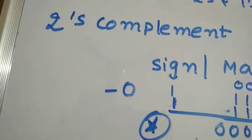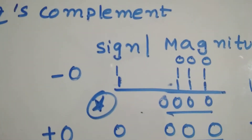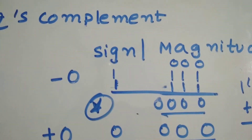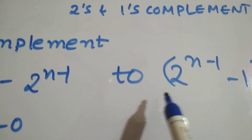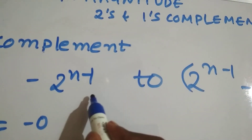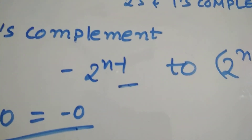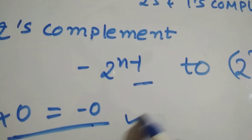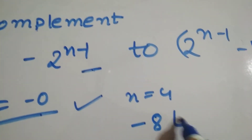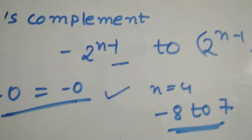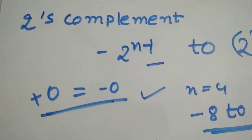Two's complement is used because it leads to simpler circuits and less complex hardware. The range of two's complement is minus (2^(n−1)) to (2^(n−1) − 1). We have one extra value on the negative side because plus 0 and minus 0 are equal. For n=4, the range is minus 8 to plus 7.